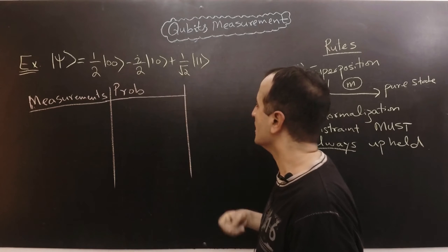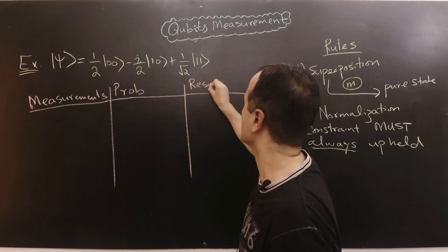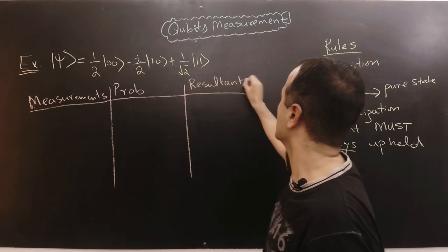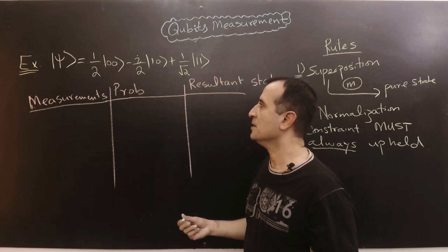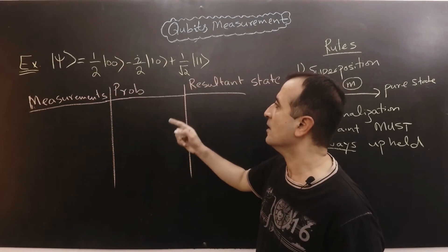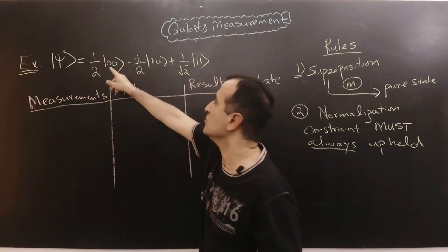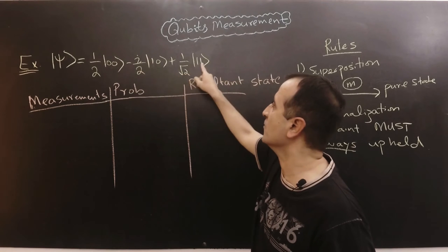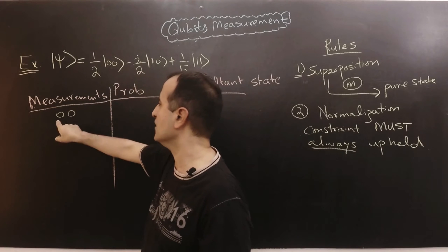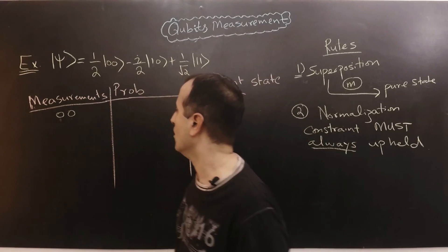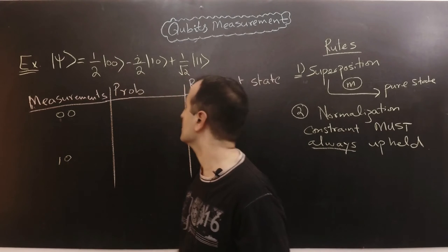We also need to find the resultant state after measurement of the register. In the case of full measurement, we can measure only the qubits whose amplitude is not equal to zero. So we can either measure zero-zero, one-zero, or one-one — those are the three possibilities.